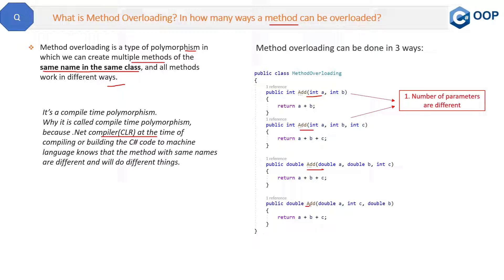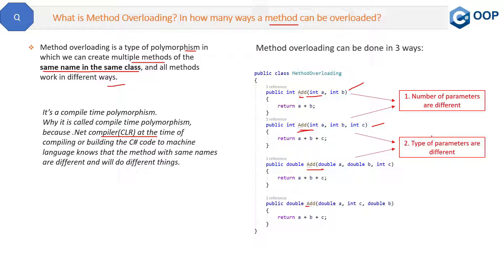The first way of overloading is when the number of parameters are different in same-name methods. In the first and second methods, the names are the same but the number of parameters are different — in the first method there are two parameters and in the second method there are three parameters. So this is one way.